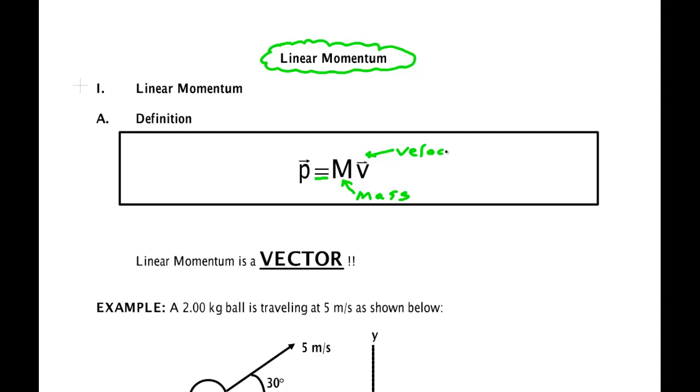This is an example of multiplication of a vector by a scalar. If the vector velocity is in this direction, then the linear momentum vector will be pointing in the same direction. It may be longer or shorter depending on whether m is greater than one or less than one, but we know that m is a positive quantity so these two vectors will point in the same direction.